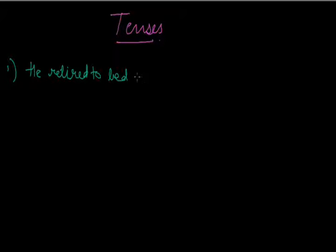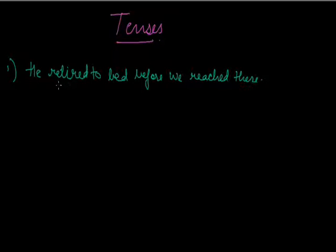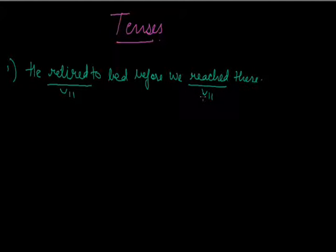First question: He retired to bed before we reached there. There is an error in this sentence of tense. Retired is the second form of the verb. Reached is also the second form. As per past perfect form, if there are two activities in a single sentence and one activity gets completed first and the second gets completed later, the activity which gets completed first takes past perfect form.